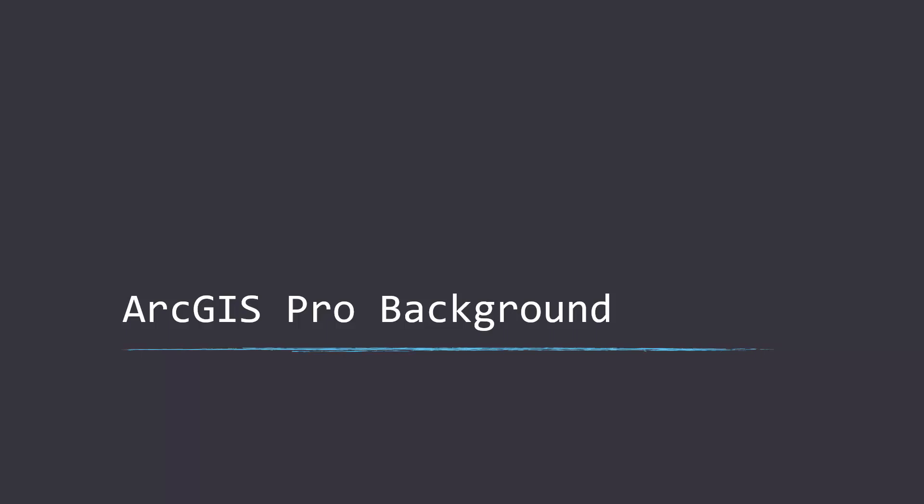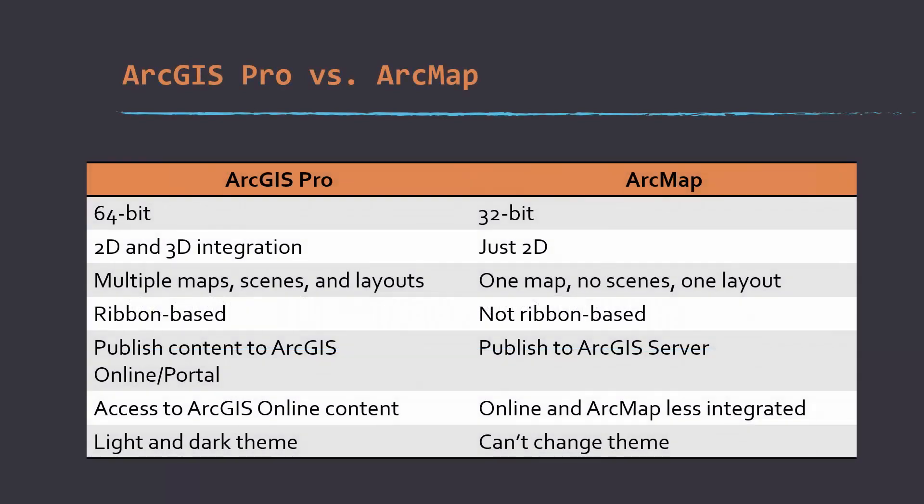First I want to start off by discussing some key differences between the ArcGIS desktop environment and the ArcPro environment. Here's a side-by-side comparison between ArcGIS Pro and ArcMap. ArcGIS Pro is 64-bit, which means that it can use your RAM and resources much more efficiently than ArcMap can. It also integrates 2D and 3D maps or scenes.